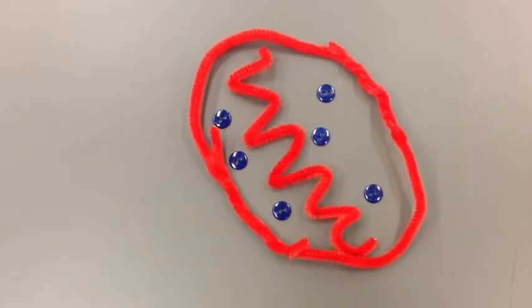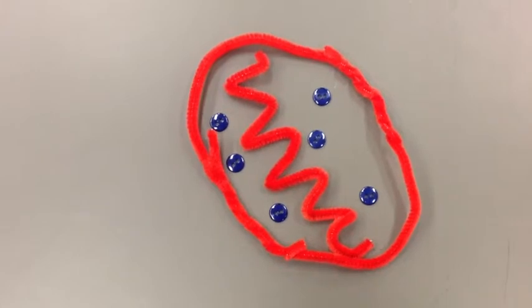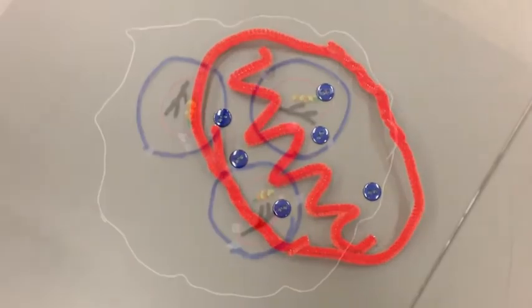The ATP that our bodies use for the myosin head and calcium pump comes from the mitochondria of the skeletal muscle cell, represented by the red pipe.